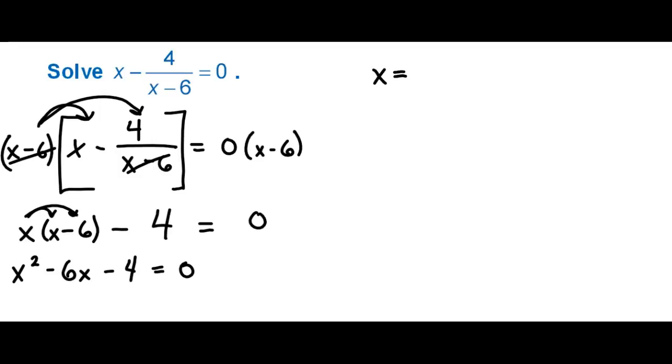So we know that x equals the opposite of b which is 6 plus or minus the square root of b squared or 36 minus 4 times a times c. So 4 times 1 times negative 4 is negative 16. So 36 minus that all over 2a which is 2.